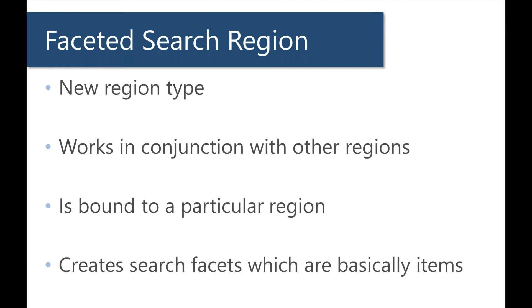I want to be clear that a faceted search region is a brand new region type, and it works in conjunction with other regions. You're going to make a classic report, and then also create a faceted search region which points to the classic report. What will happen is it will automatically add facets — which function and behave just like items, but a facet is controlled by the faceted search region. It's like an item, but not exactly an item. This allows us to create filters that point to a classic report and filter it without writing any JavaScript whatsoever.